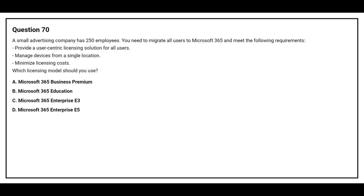Question number 70. A small advertising company has 250 employees. You need to migrate all users to Microsoft 365 and meet the following requirements: provide a user-centric licensing solution for all users, manage devices from a single location, and minimize licensing cost. Which licensing model should they use? Option A: Microsoft 365 Business Premium. Option B: Microsoft 365 Education. Option C: Microsoft 365 Enterprise E3. Option D: Microsoft 365 Enterprise E5. The correct answer is Option A, Microsoft 365 Business Premium.